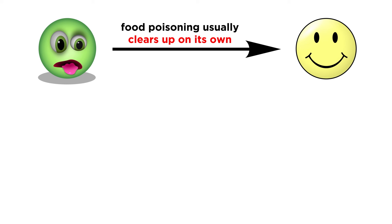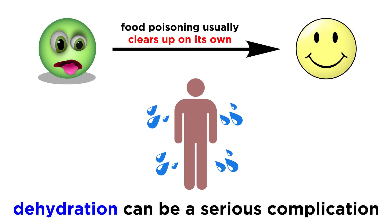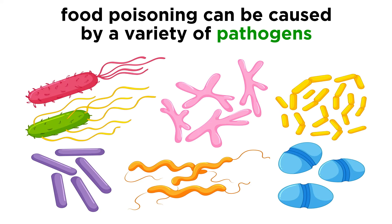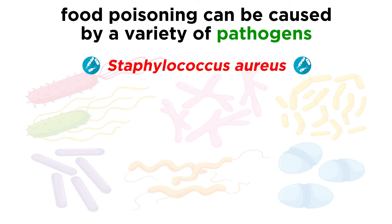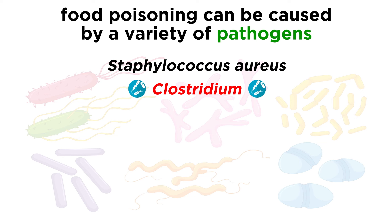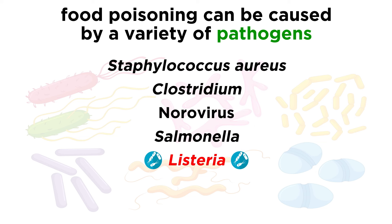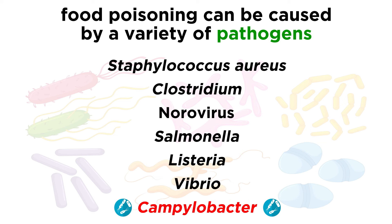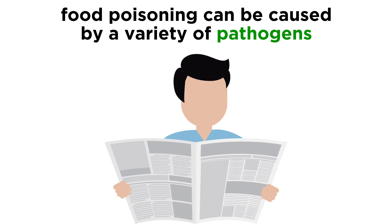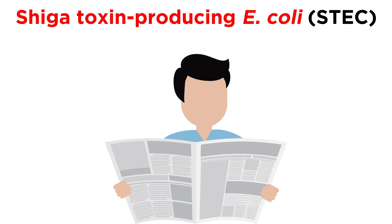It turns out that most cases of food poisoning clear up on their own without any type of treatment required. However, one of the most serious complications of food poisoning is dehydration, which can be especially deadly for those that are very young or very old. While food poisoning can be caused by a variety of pathogens, including Staphylococcus aureus, Clostridium, Norovirus, Salmonella, Listeria, Vibrio, or Campylobacter, today we're going to talk about one notorious cause in particular — Shiga toxin-producing E. coli, or STEC.